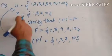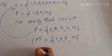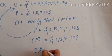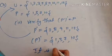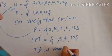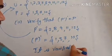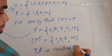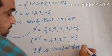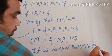And P is also {1, 3, 7, 10}. Therefore it is verified that complement of P complement is equal to P.